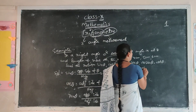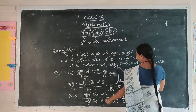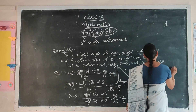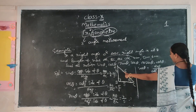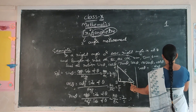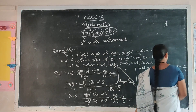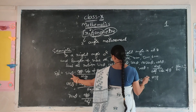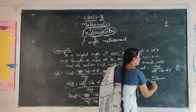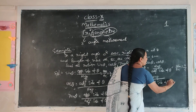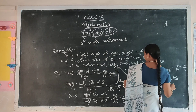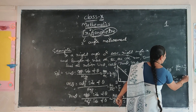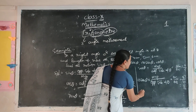Next, tan theta. Tan theta formula is opposite side of theta by adjacent side of theta. Theta's opposite is AB — 4. Theta's adjacent is BC — 5. So tan theta equals 4 by 5. Next, secant theta. Secant is the reciprocal of cos, so: hypotenuse by adjacent side of theta. Hypotenuse is AC — 6. Adjacent is BC — 5. So secant theta equals 6 by 5. Next, cosecant theta. Cosecant is the reciprocal of sine, so: hypotenuse by opposite side of theta. Hypotenuse AC is 6, opposite AB is 4. 6 by 4 simplifies to 3 by 2.